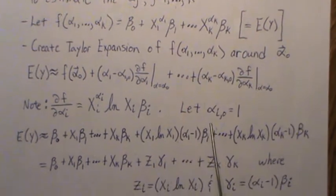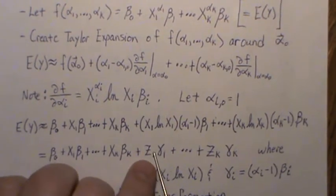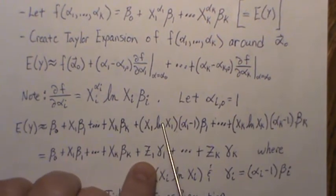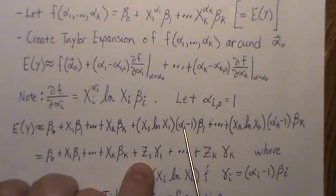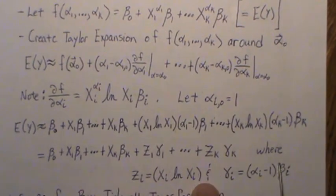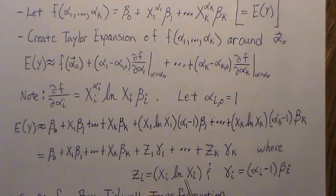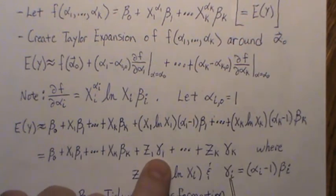Now we're going to reparametrize. I kind of grouped it: these are the X's, the regressors, and these are the unknown parameters. So when we reparametrize this, these of course just come straight down and we call this Z_1, and all of this gamma_1, and we do that for all k. Note that Z_i is X_i log X_i, and the gammas - gamma_i is equal to (alpha_i minus 1) beta_i.